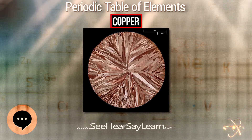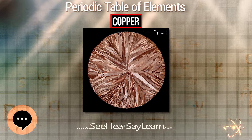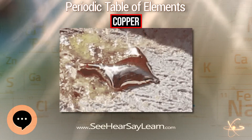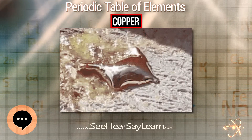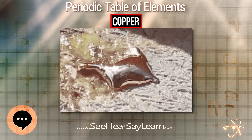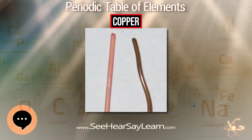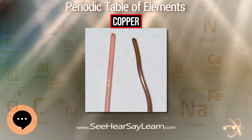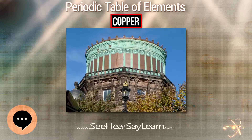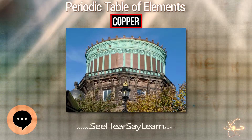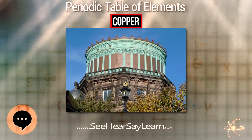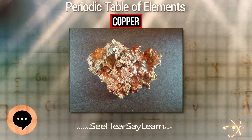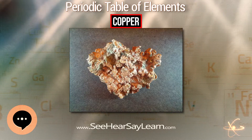Copper is used as a conductor of heat and electricity, as a building material, and as a constituent of various metal alloys such as sterling silver used in jewelry, cupronickel used to make marine hardware and coins, and constantan used in strain gauges and thermocouples for temperature measurement.